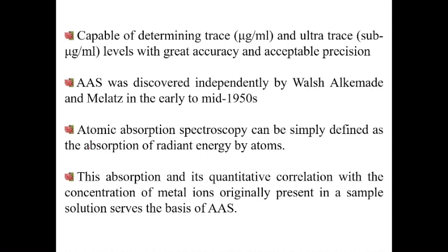AAS was discovered independently by Walsh, Alkemade, and Meloche in the early to mid 1950s. It can be simply defined as the absorption of radiation by atoms. One key criterion is that atoms should be present in a gaseous vapor state, so atomization must be performed. The quantitative correlation of this absorption with concentration of metal lines present in the sample is the basis for AAS — this is known as Beer-Lambert law, which is the same principle underlying every spectroscopy technique.